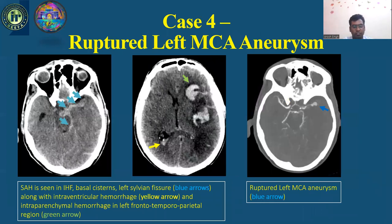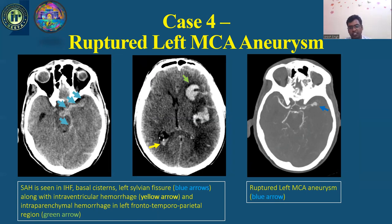Case 4 is a ruptured left MCA aneurysm. On NCCT head, we can see SAH in the interhemispheric fissure, basal cisterns, and left sylvian fissure shown by blue arrow, along with intraventricular hemorrhage shown by yellow arrow, and intraparenchymal hemorrhage in the left frontotemporal parietal region shown by green arrow. On CT angiography, we can see a ruptured left MCA aneurysm shown by blue arrow.